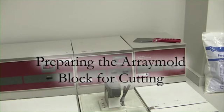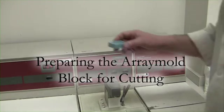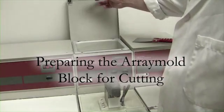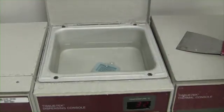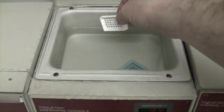Hi everyone, welcome to this special video on preparing an array block for cutting. Once the array mold is warmed in a paraffin bath, place it on an ice plate or ice tray and add a cassette.